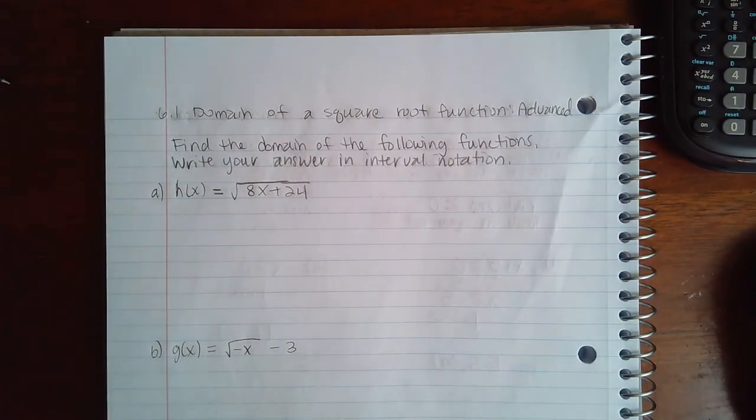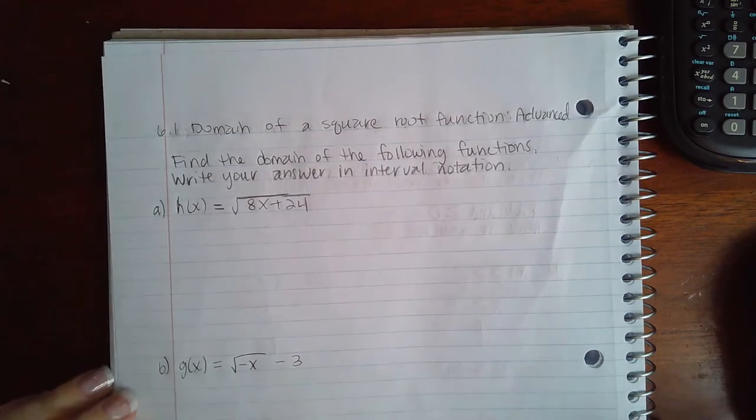Here we have the domain and range of a square root function advanced, so the process is going to be the same except what happens as we follow that process might be a little bit different than the basic topic.